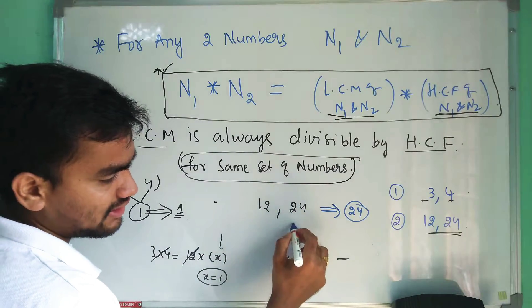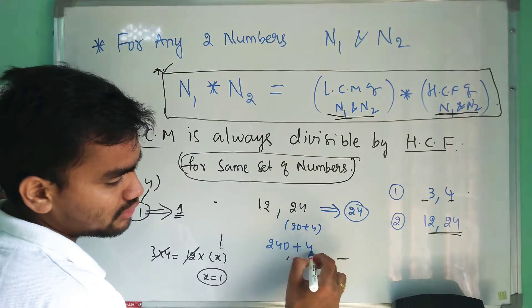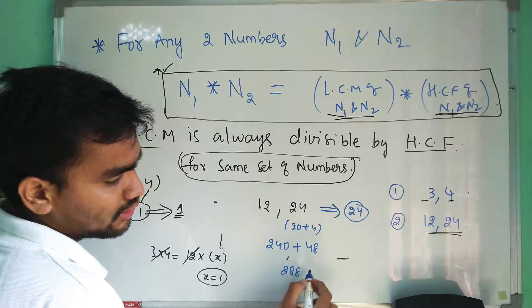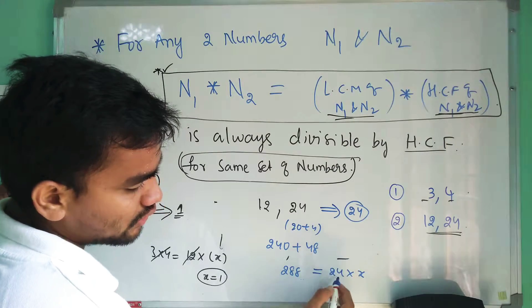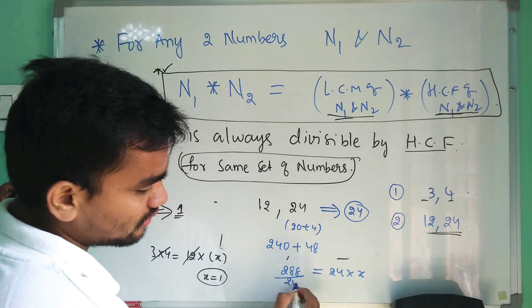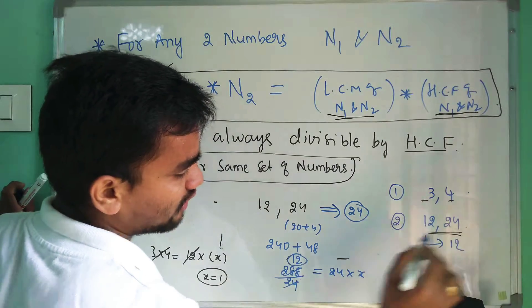So let me multiply these two. This can be written as 20 plus 4. So 12 times 20 is 240 plus 12 times 4 is 48, that is 288. So 288 equals 24 into, let the HCF be x. So you can simply do that, it will be 12.